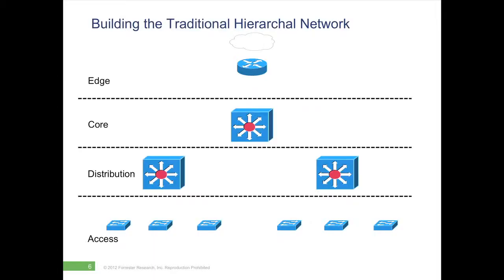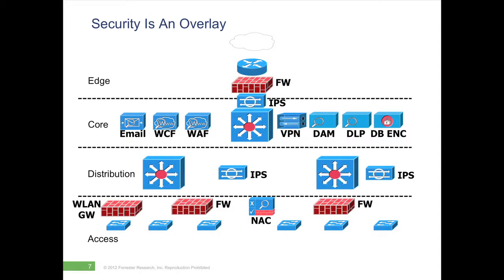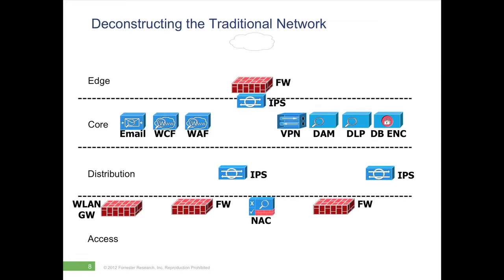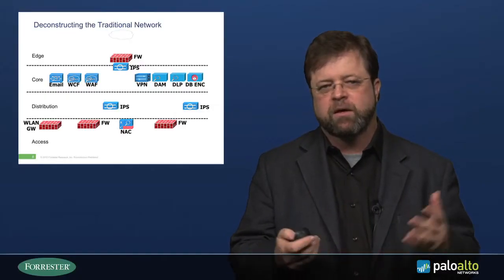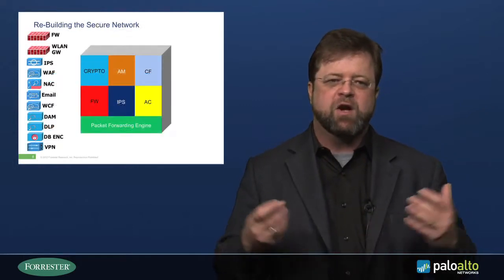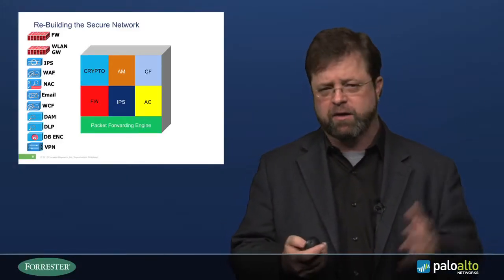If you look at the old hierarchical network, where we had multiple layers of switching infrastructure laid out in a pyramid style, we found that that was very, very hard to secure. We ended up having to place lots of different security controls everywhere, and it became unmanageable and ineffective. At Forrester, we deconstructed the traditional network and realized there were a lot of things we needed to do to a packet to make sure it was delivered securely. We realized that we can't eliminate these features and this functionality, but we can aggregate it. In rebuilding the secure network, we thought: what if we can take all of these features and place them in a single box, a single appliance, and have a packet forwarding engine underneath all of that so we can deliver packets securely all over the network in a more simple way.